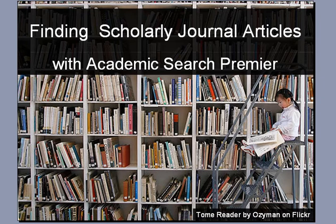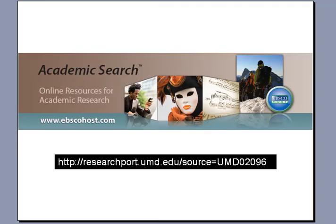Your professor has asked you to find three scholarly journal articles for your paper. How do you go about finding them? This tutorial is going to show you how to find scholarly journals using one of the library's databases called Academic Search Premier. It has a large collection of articles and includes information on almost any topic, so it's a good place to start your research. The techniques used to find scholarly journals here will work in many of the subject-specific library databases as well.